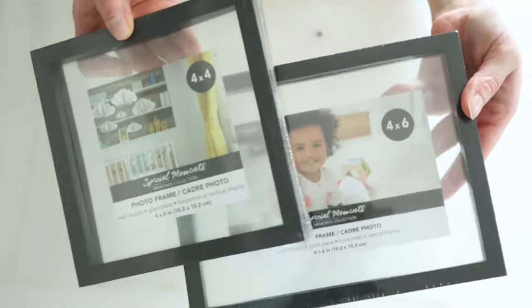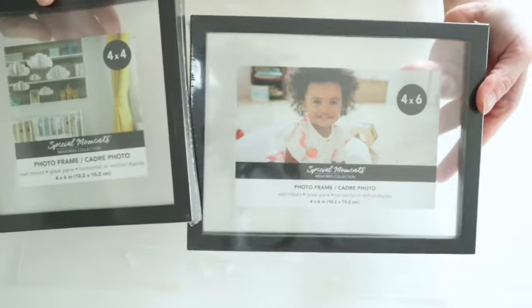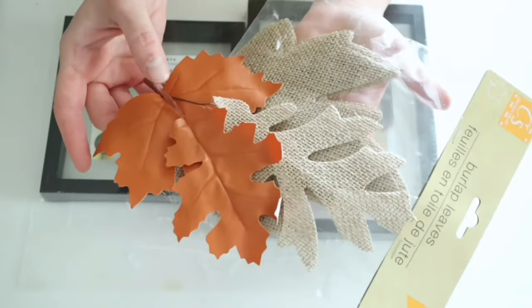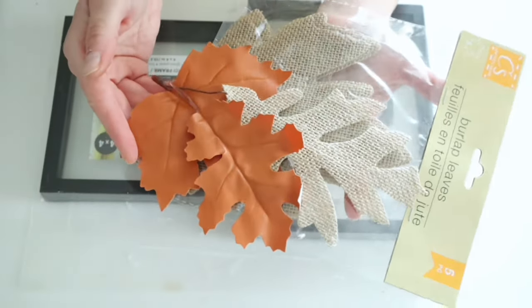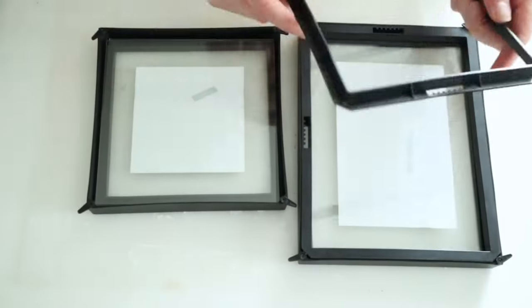For this first project, I picked up two of these see-through frames from Dollar Tree. I got a smaller one and then a little bit larger 4x6 one. And I also picked up some of these fall leaves. I got the burlap ones and the leather ones from Dollar Tree.